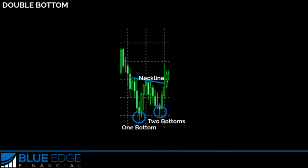So we could place a pending order right here — a buy stop — so that it triggers and we catch all the profit going up since we're expecting that reversal. You can see we placed it right here above the neckline, and the neckline was drawn by connecting the left side here before the first bottom, connecting here in the middle, and then touching the right side as well.